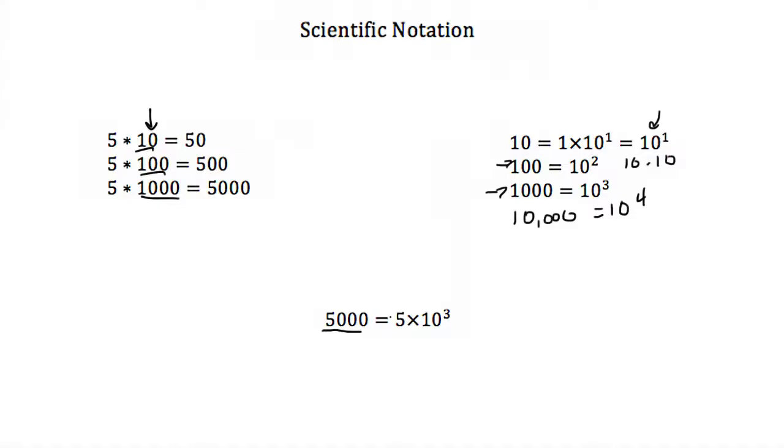When we write 5,000 as 5 times 10 to the third, because I would just replace this thousand with a 10 to the third, we would call this 5,000 in scientific notation.